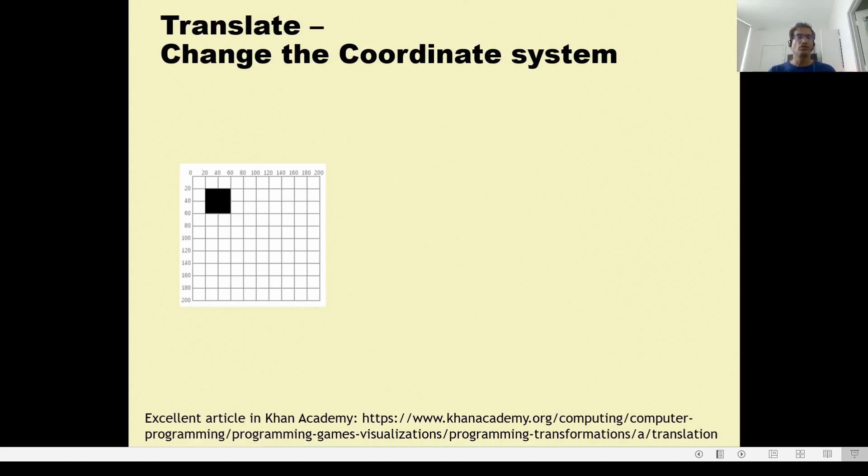When we say we're going to change the coordinate system first, let's understand what is going on. You know that in processing the coordinate origin is 0,0 at the top left. And in this case, we have come down 20, 20. And we have also drawn a square of length 40 and width 40. Let's say that you want to draw this exact same square, but you want to move maybe 60 units, 60 pixels in the x-axis and say 80 units in the y-axis.